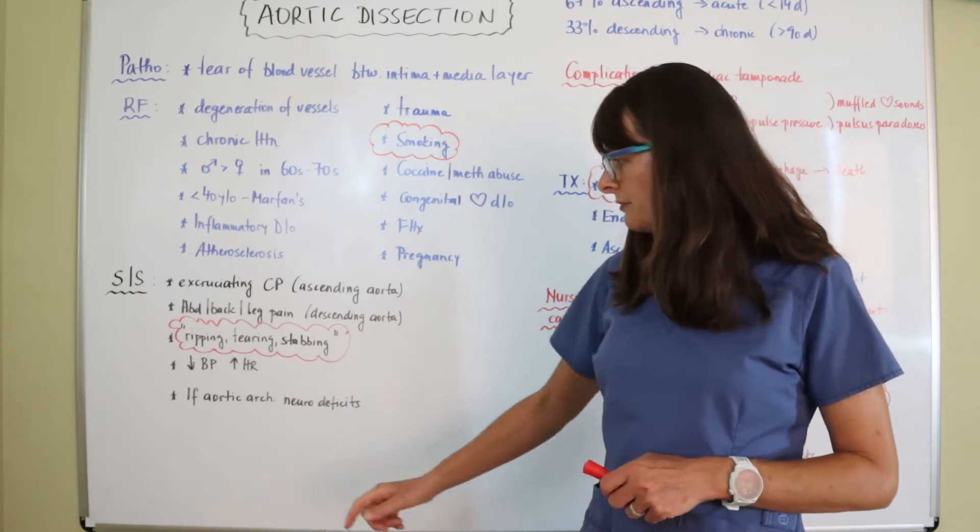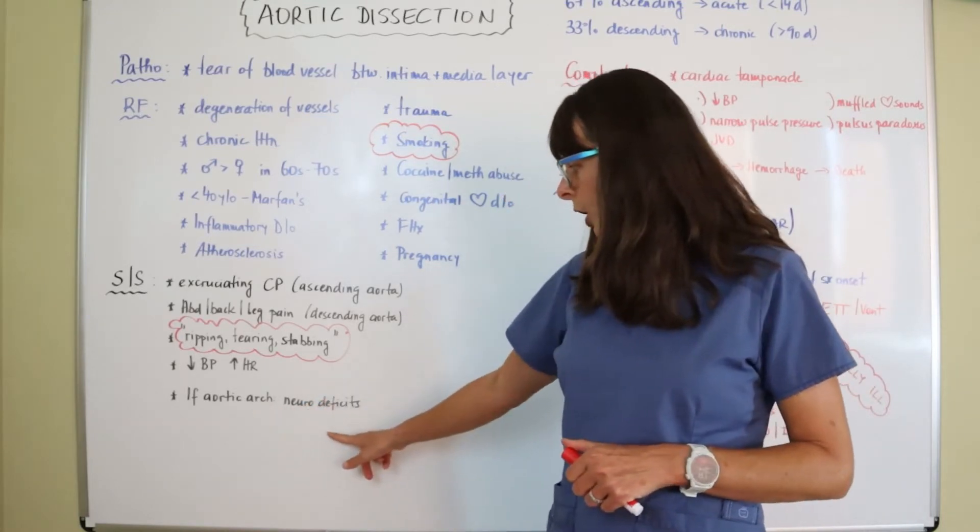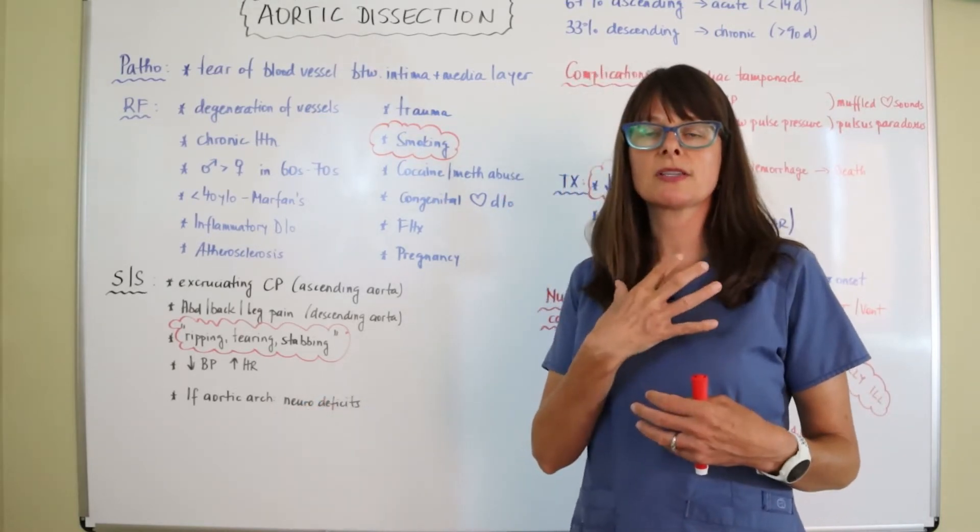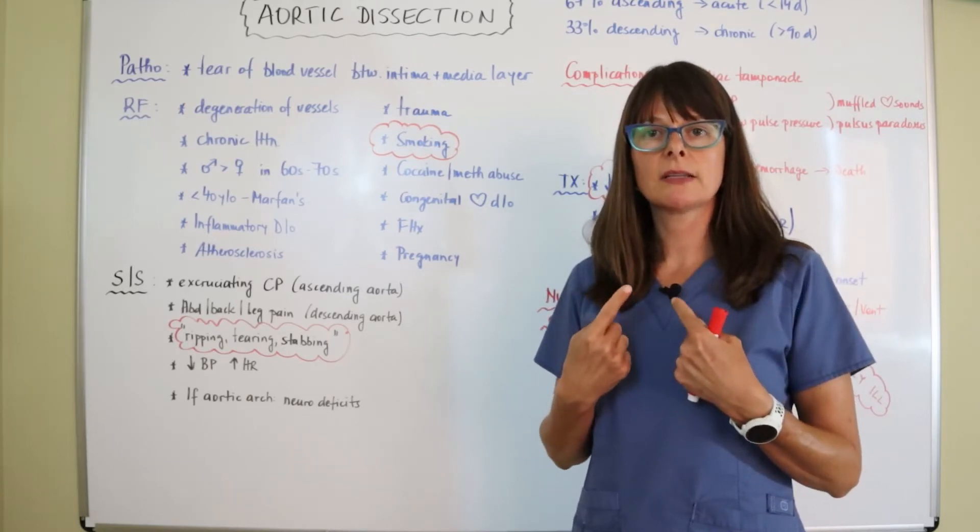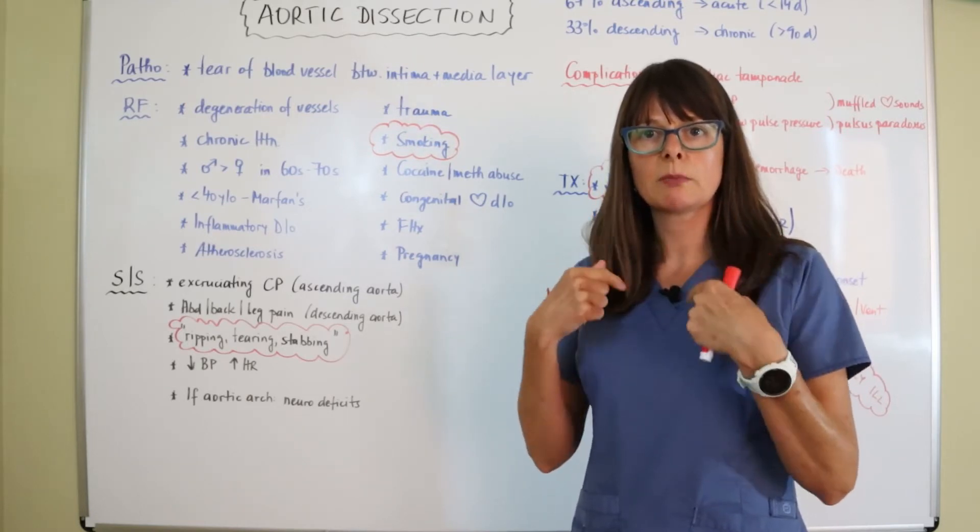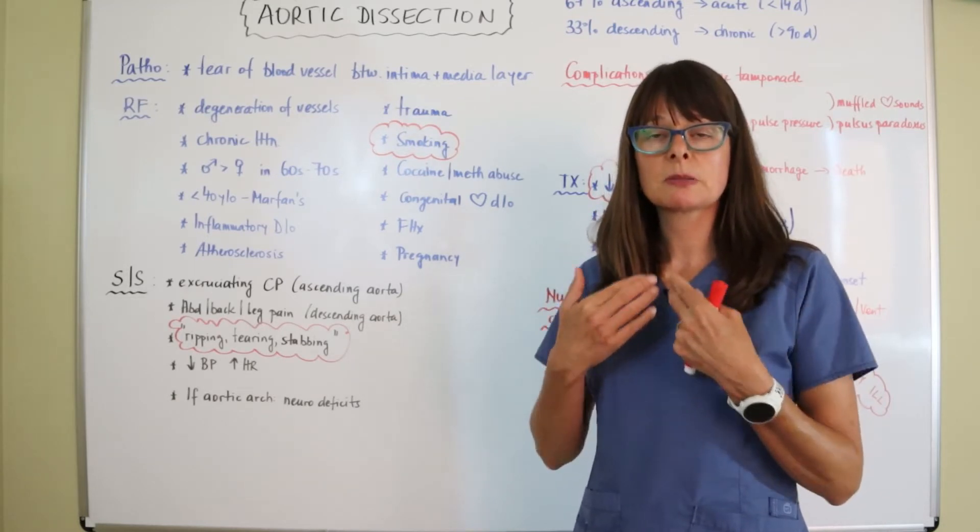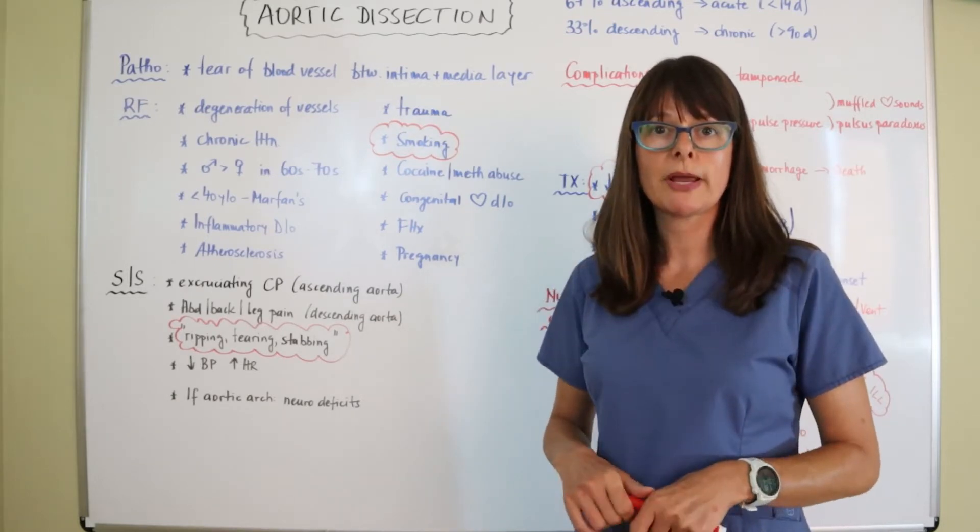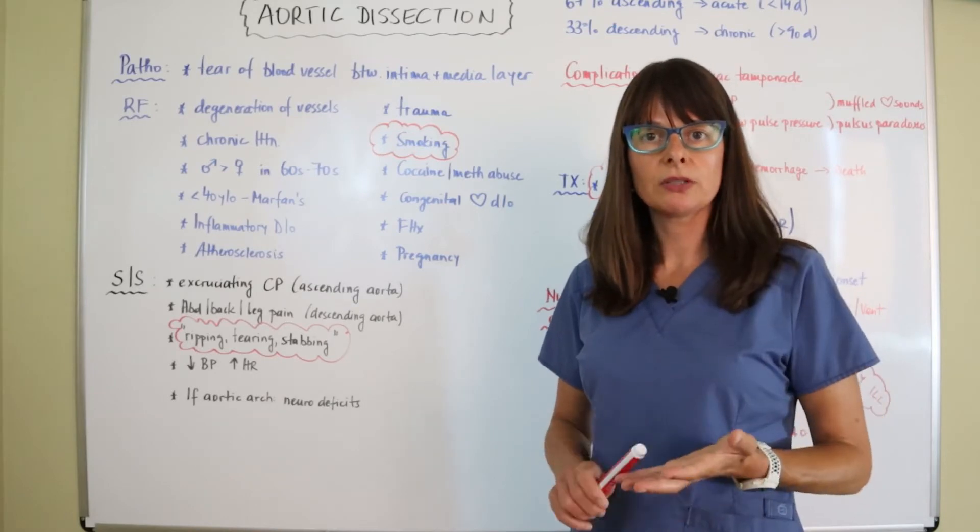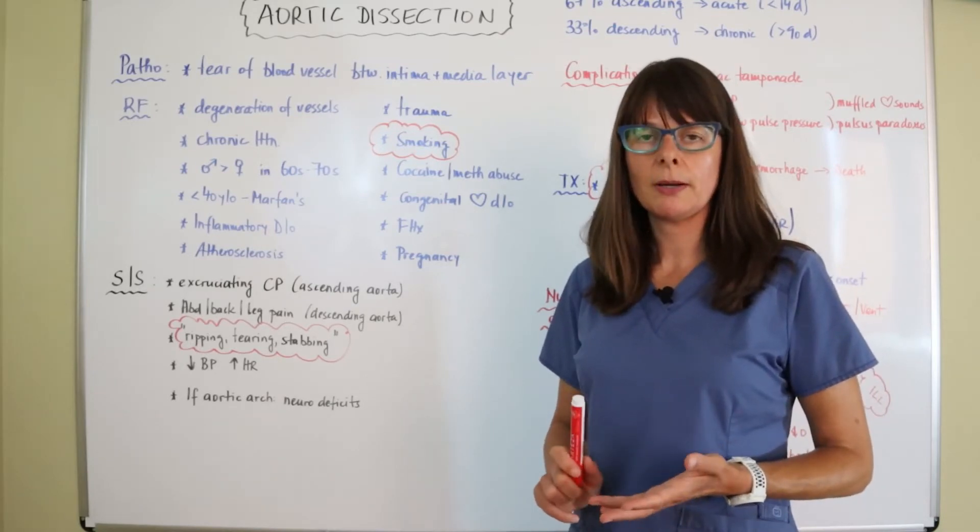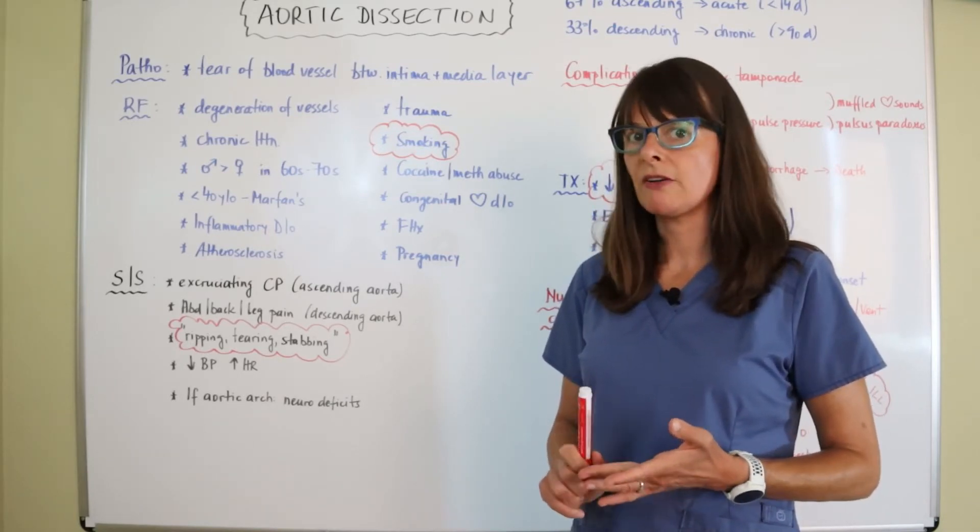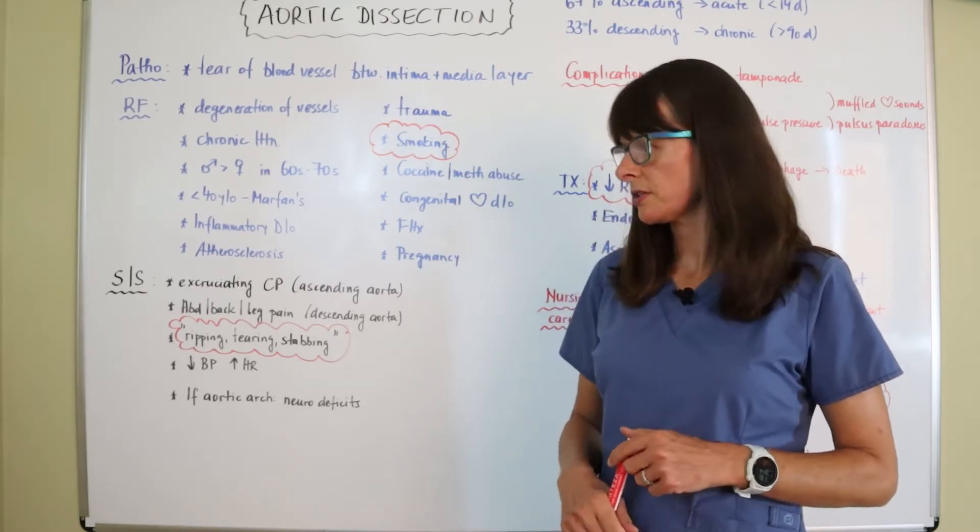And if the dissection occurs in the aortic arch in this upper chest area, remember we said the first branches feed the brain as well as the upper extremities, the patient can have neural symptoms because now the blood flow to the brain is limited. So they might feel dizzy, they might have a syncope event, they might have headaches, or present with altered level of consciousness.